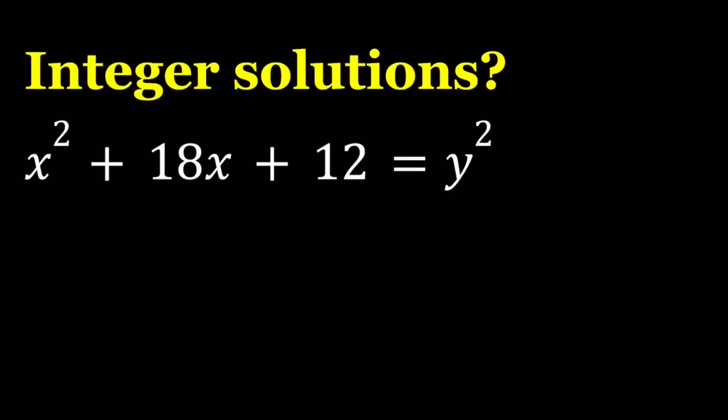Now when you have a problem that you have to solve for integers, one of the things that you're looking for is a way to factor this expression. So to make this expression factorable, x² + 18x + 12 is not factorable as is. So we're going to complete the square.